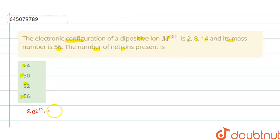The solution of this question is: we have the diapositive ion, diapositive ion of M²⁺, is 2, 8, 14. So this is 24.